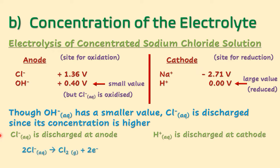Chloride ions are oxidized to form chlorine gas and two electrons. The two electrons are transferred to the cathode, where they are gained by hydrogen ions to reduce them to hydrogen gas.